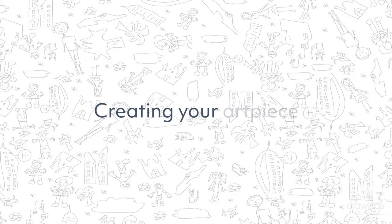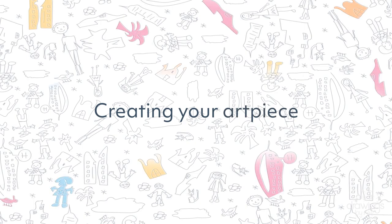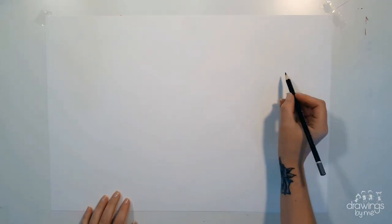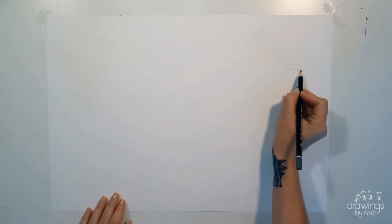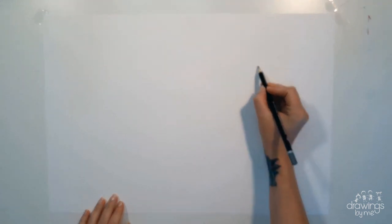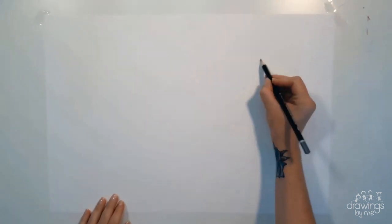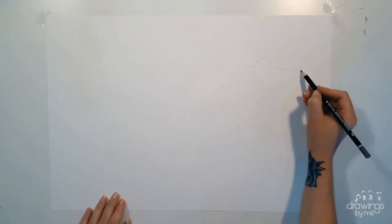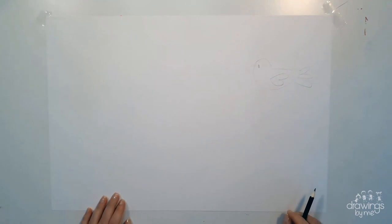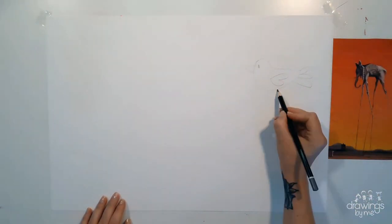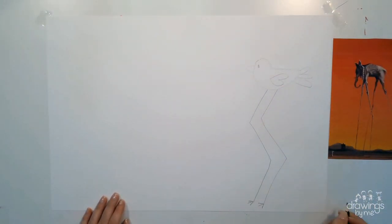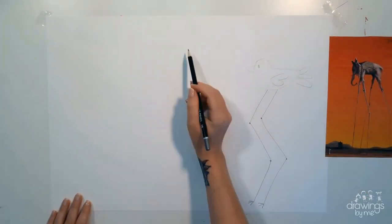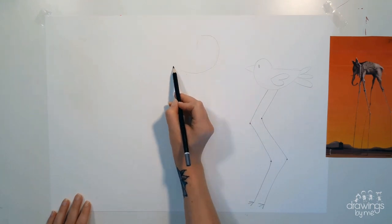You will need pencils and a rubber, colouring pens including black and watercolours for the background. In this painting you're going to explore surrealism by making the legs or arms of your animal extremely long. I have chosen to create tall birds but you can choose any animal that you would like.